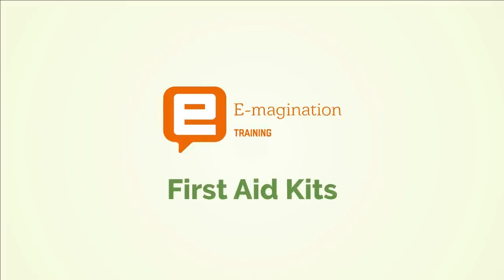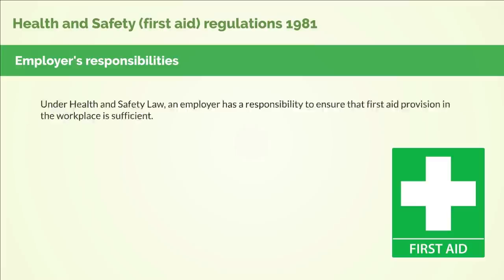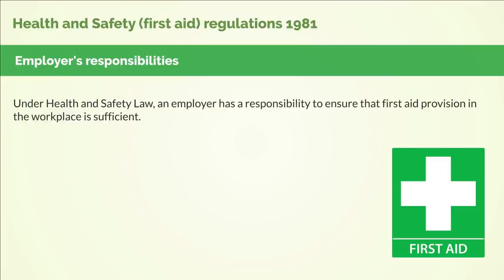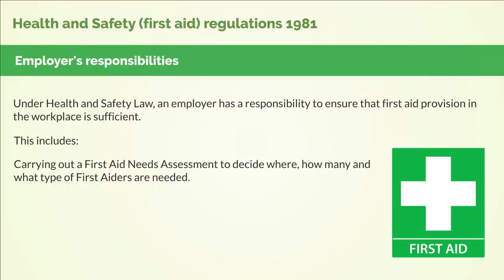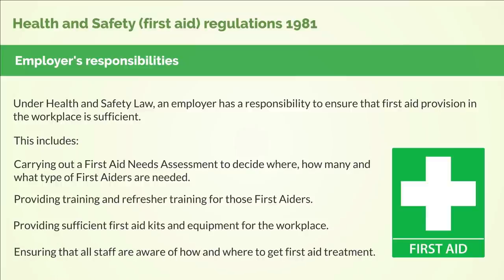We will now look at first aid kits. Health and Safety First Aid Regulations 1981 — employers' responsibilities. Under health and safety law, an employer has a responsibility to ensure that first aid provision in the workplace is sufficient. This includes carrying out a first aid needs assessment to decide where, how many and what type of first aiders are needed, providing training and refresher training for those first aiders, providing sufficient first aid kits and equipment for the workplace, and ensuring that all staff are aware of how and where to get first aid treatment.